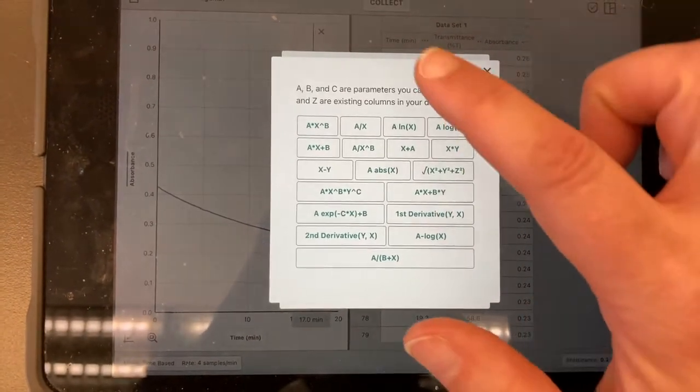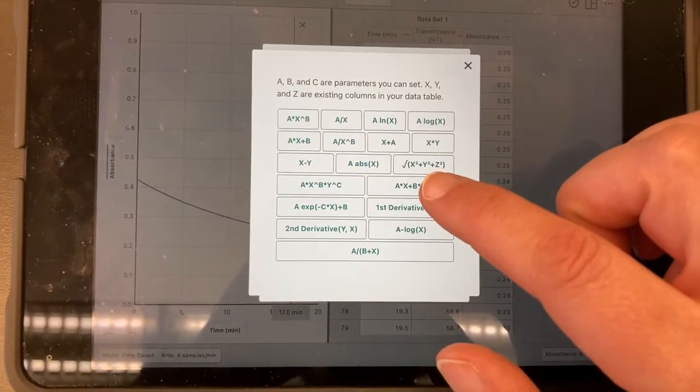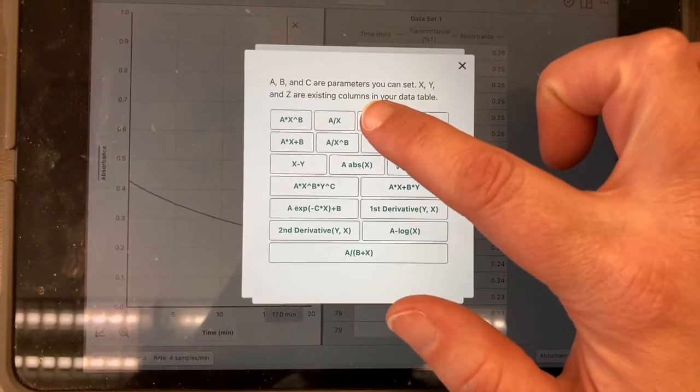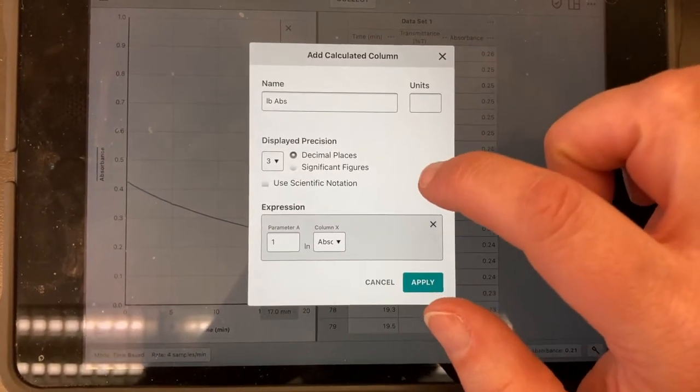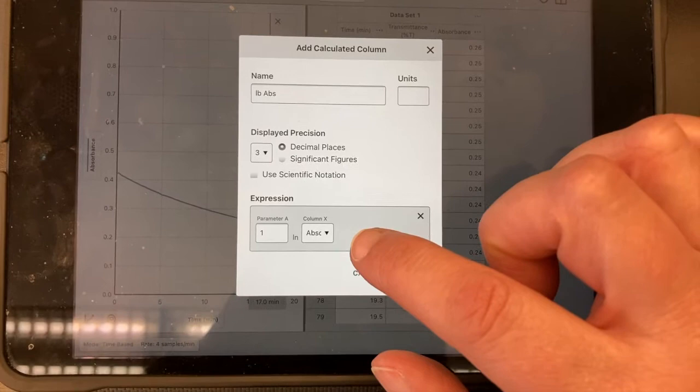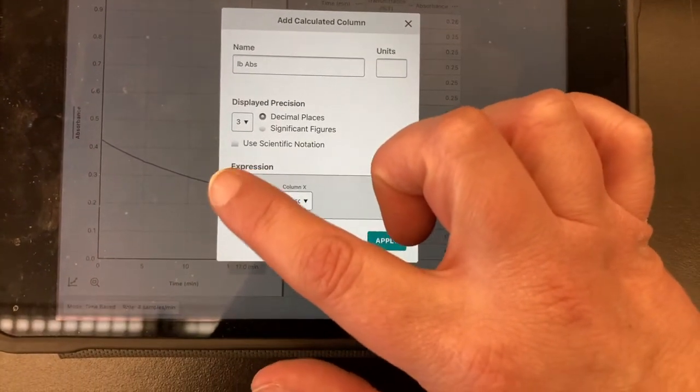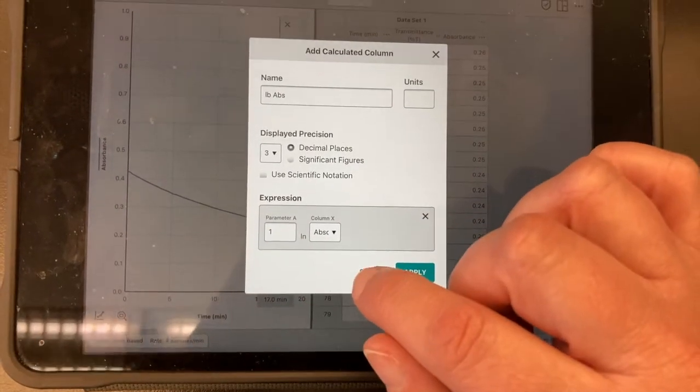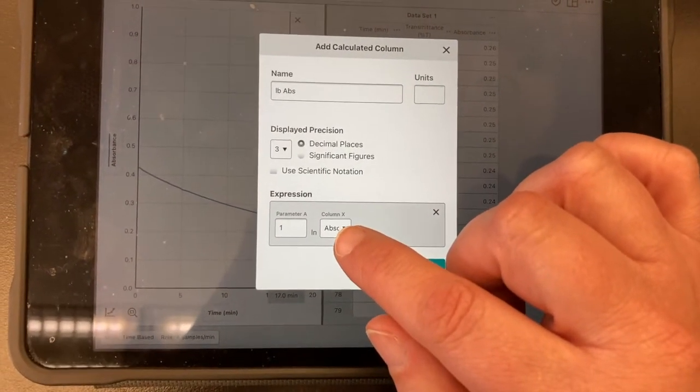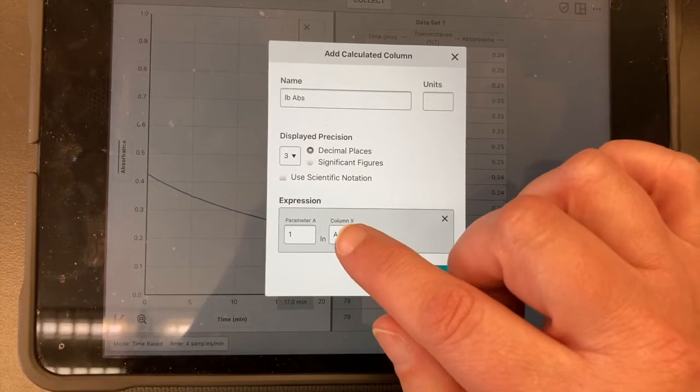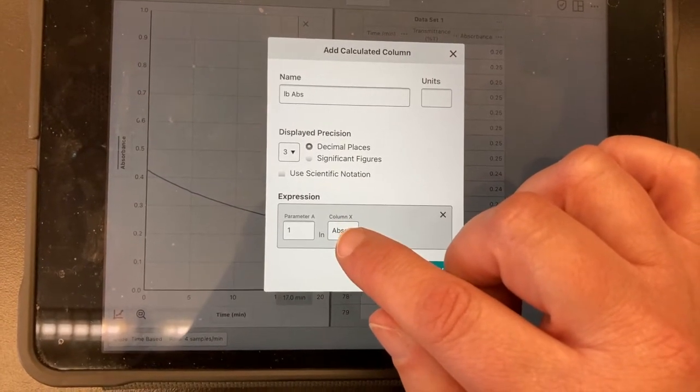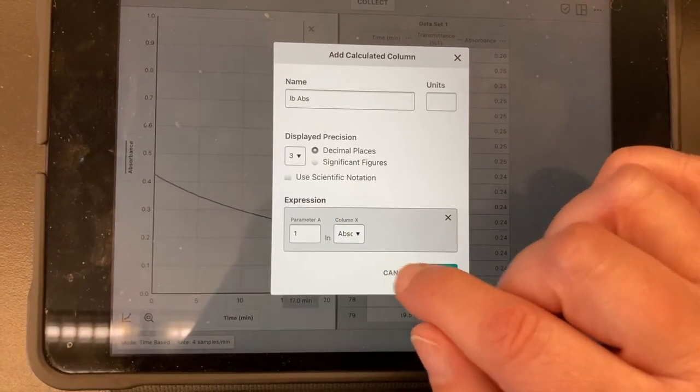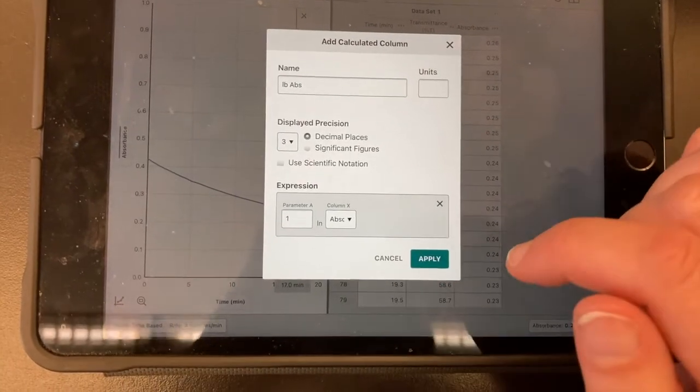And then we are going to insert an expression. So here we are going to look on here until we find the natural log, which is here. And we don't really care what the multiplying factor is, the coefficient is, so we are just going to leave that as one. And then we are also going to do this in reference to the absorbance. So if it says anything other than absorbance under column X, that is what we need to do there. So we are going to apply that.